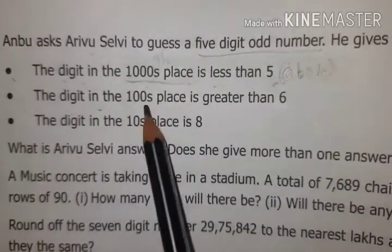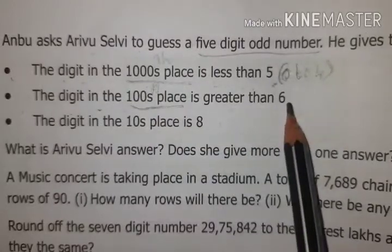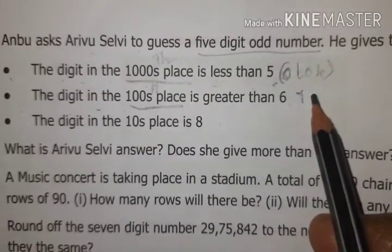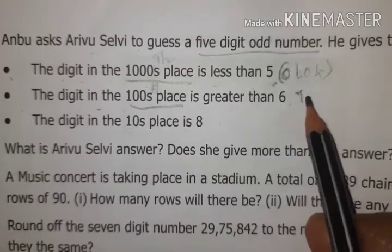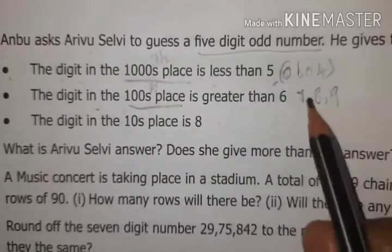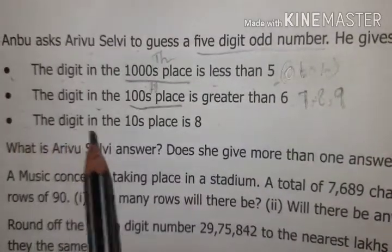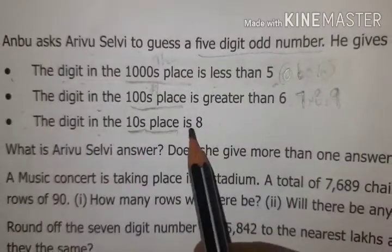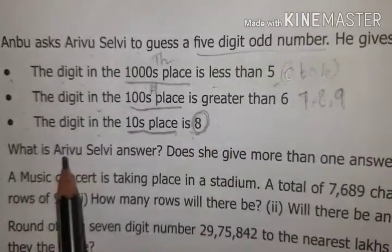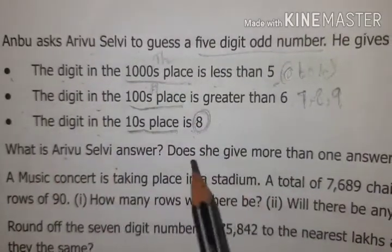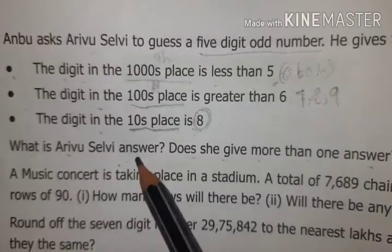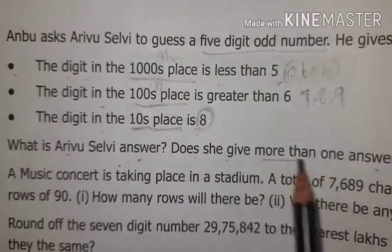The digit in the hundreds place is greater than six, so seven, eight, or nine. The digit in the tens place is eight — fixed. Does Arivasalvi give more than one answer? Yes, we can give more than one answer. Let us revise the hints: thousands place less than five (zero to four), hundreds place greater than six (seven, eight, or nine), tens place is eight only.